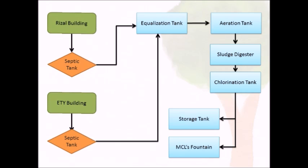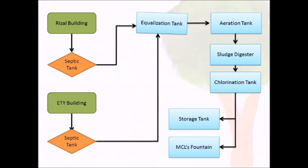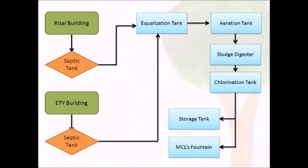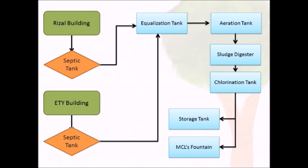The waste in MCL is from the two buildings which are the ETY building and the Riesel building. The waste will flow to the equalization tank, then to the aeration tank, to the sludge digester tank, chlorination tank, and it will flow to the storage tank, and finally it will burst out at MCL's water fountains.